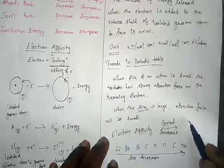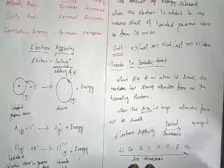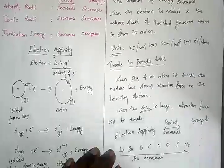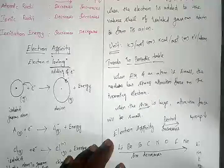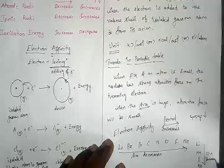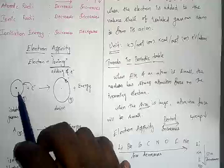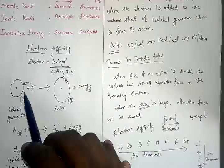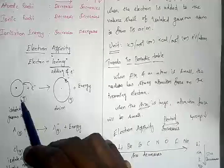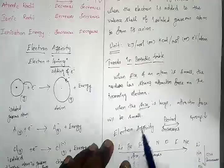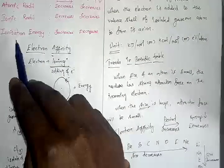Along the group, when you go from top to bottom — lithium, sodium, potassium, rubidium — the size of the atom increases. Because the size increases, the nucleus's attraction power becomes less, and the incoming electron is not added as firmly. Therefore, electron affinity decreases down the group, which is very similar to the trend in ionization energy.